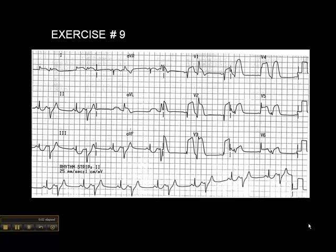Exercise number nine is a bit of a nasty ECG, so this is a good one to look at together. Looking at the rhythm strip at the bottom, we have a sinus beat, then a PVC, sinus beat, PVC, sinus beat, PVC — so this is a bigeminal rhythm. Right off the bat, we know we've got a lot of ectopy, and we don't want to analyze these ectopic beats when determining whether the patient is having an infarct.